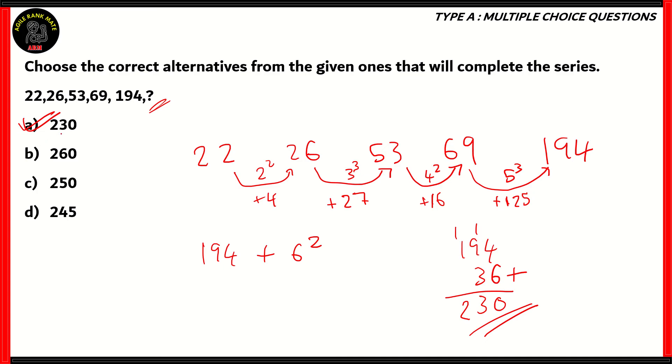And we did that by finding out the relation between the series, which is basically the differences. The differences are whole numbers which are squared or cubed, depending on whether they're even or odd. So therefore, options B, C, and D are incorrect, because if you put them in, you will not get the exact series that had been followed until 194.